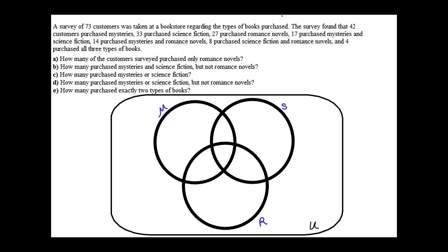As we begin to complete the Venn diagram, we want to begin in the region that's the intersection of all three of these sets. Looking back at the application problem, we see that 4 purchased all three types of books.